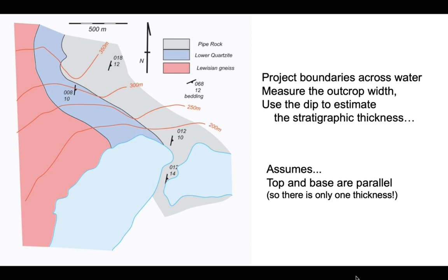Now there are a few assumptions we need to consider with this method. We're going to assume that the top and the base of this stratigraphic unit are parallel. In other words, this unit has a constant thickness. We're also going to assume that the bedding is parallel to the boundaries of this unit.